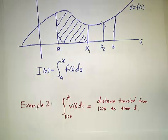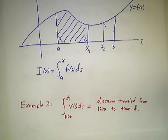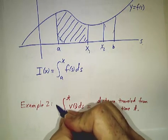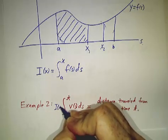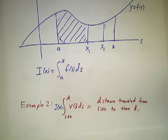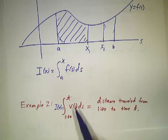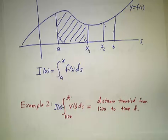You could do the same thing for our velocity problem. If we call this i of t, that's going to be the integral from 1 to t. So it's the distance traveled starting at 1 o'clock and ending at time t.